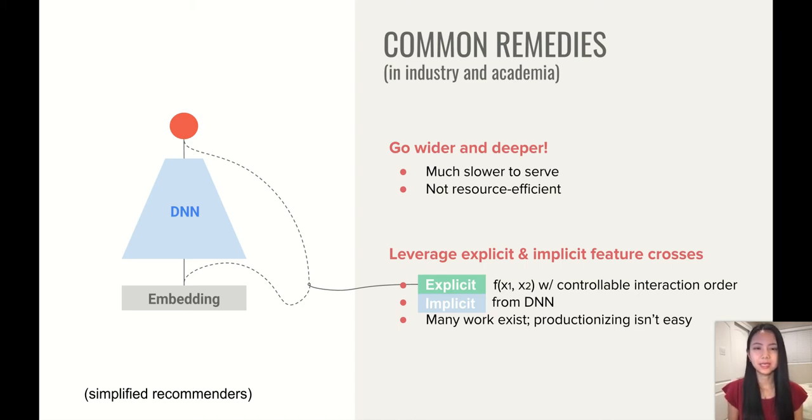And there are actually many works exist. Some insert the designed explicit features in between the embedding and the DNN. While others combine them in the logic level. And among all these works, we're particularly interested in deep and cross-network due to its elegant and effective structures. However, productionizing it isn't easy, and I will tell you why.